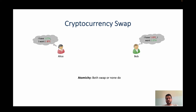We have two users, Alice and Bob, wanting to exchange their tokens from different cryptocurrencies — Bitcoin and Ethereum in this example. We want the property of atomicity in this exchange, which guarantees that either both users swap their coins or none of them do. Achieving this property is non-trivial, as there is no trusted exchange service like in a fiat currency system to guarantee fairness.